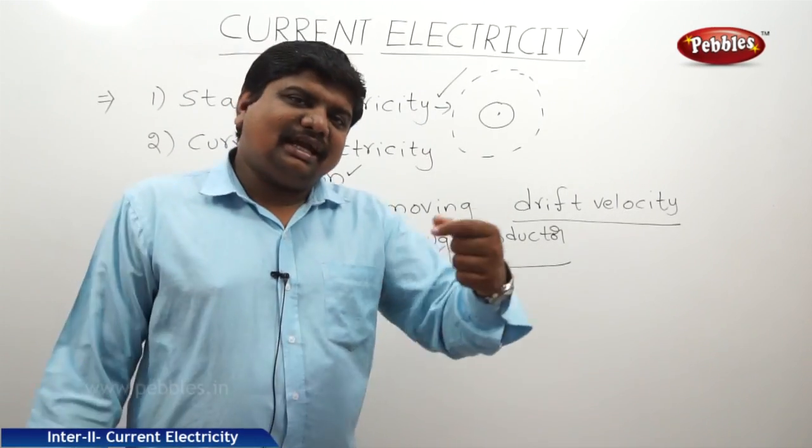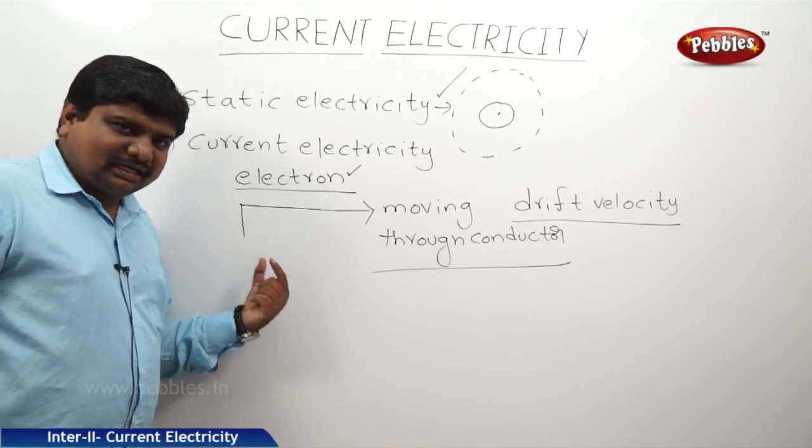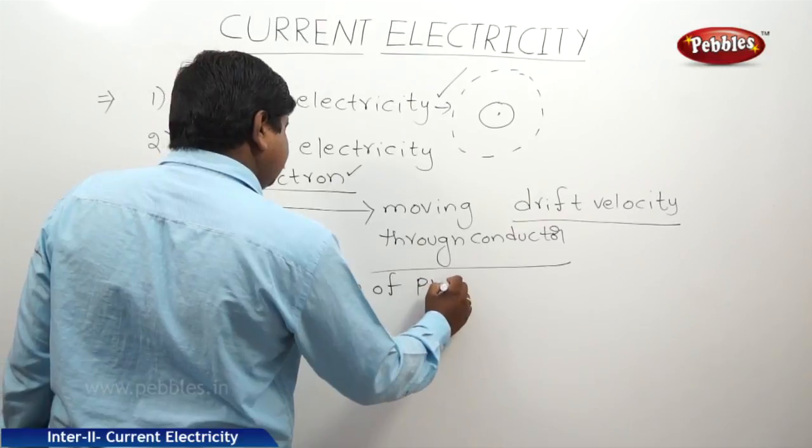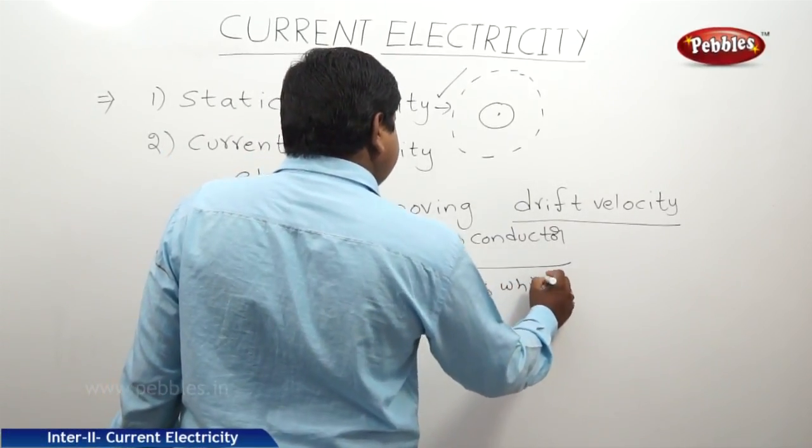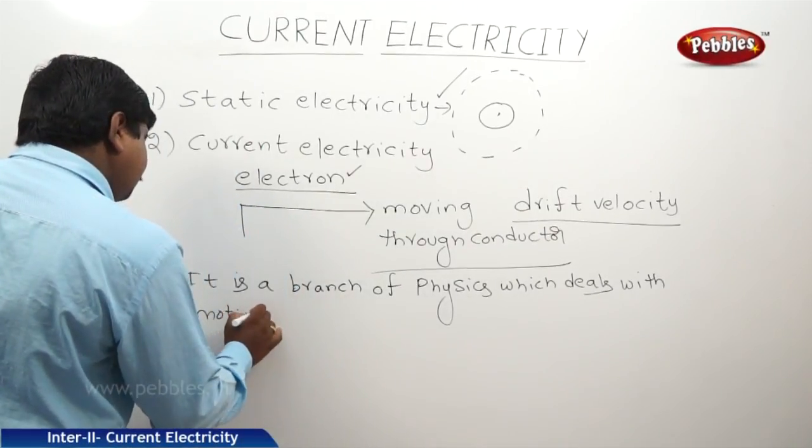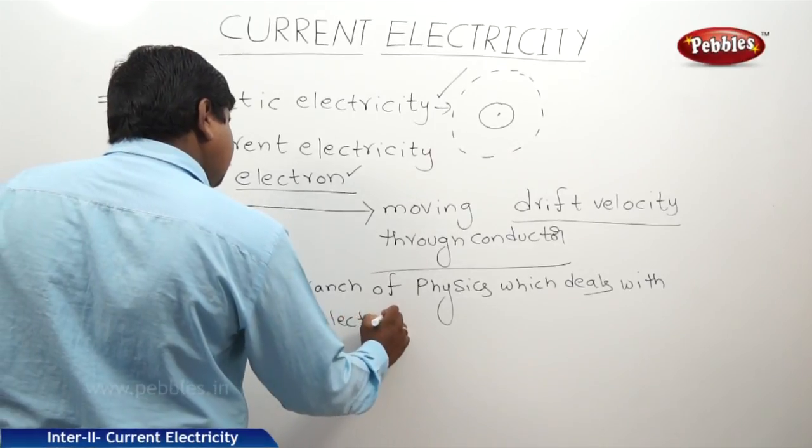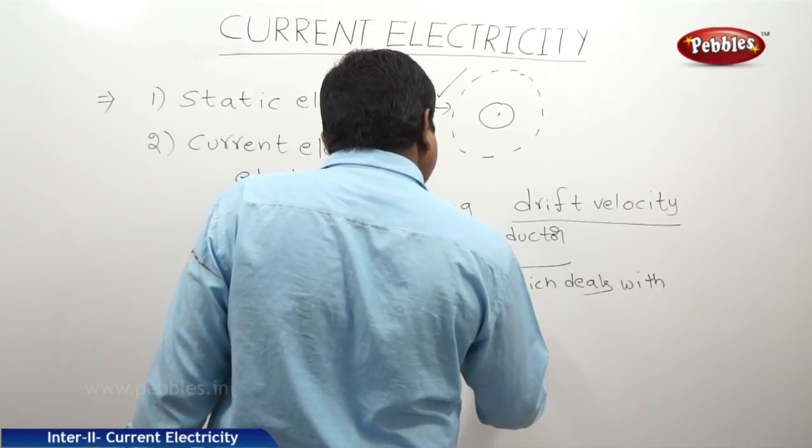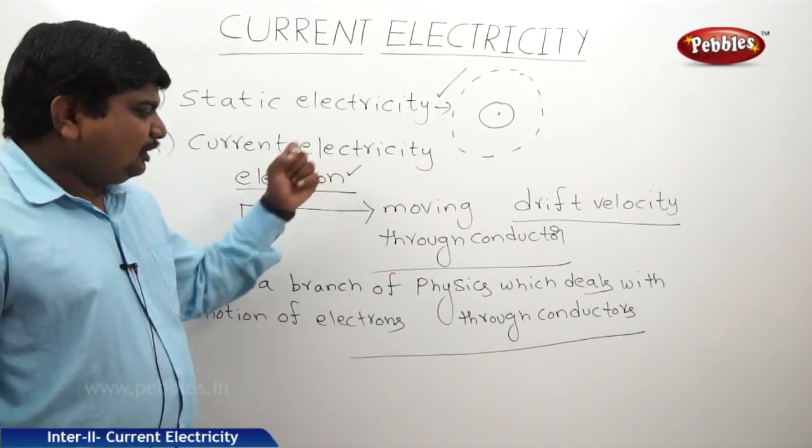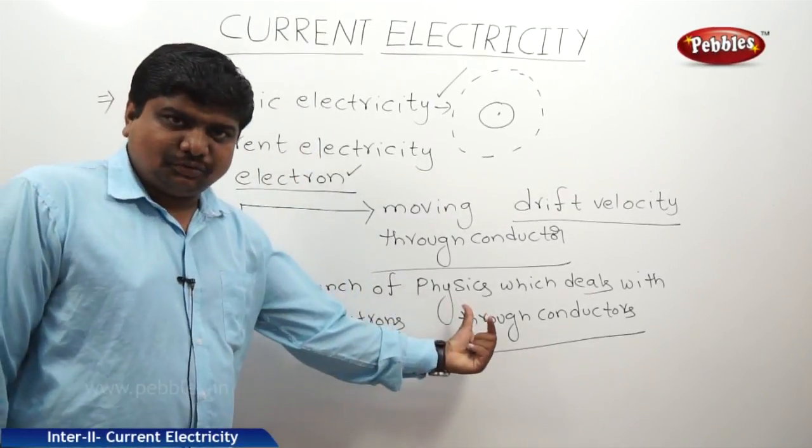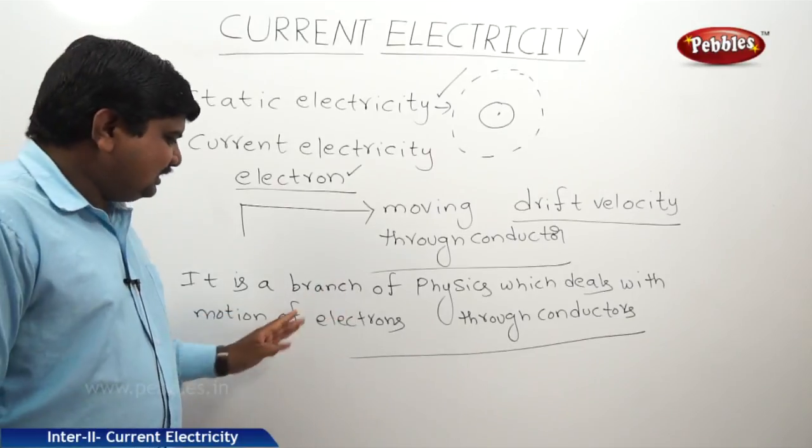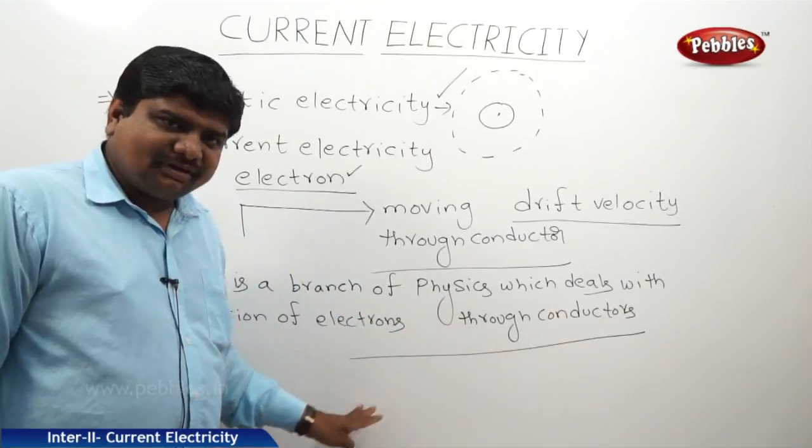So, what is current electricity? It is a branch of physics which deals with the motion of electrons through conductors. In physics, there is a part of physics. We will discuss the part of the motion of the electrons.